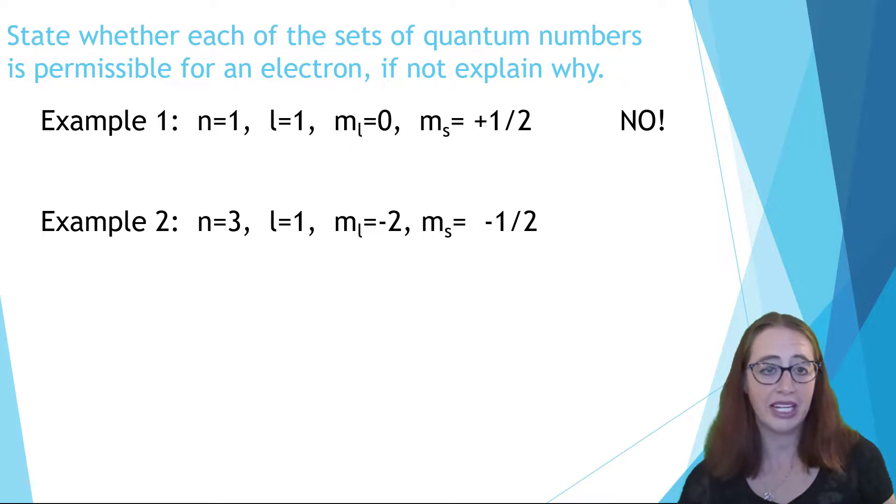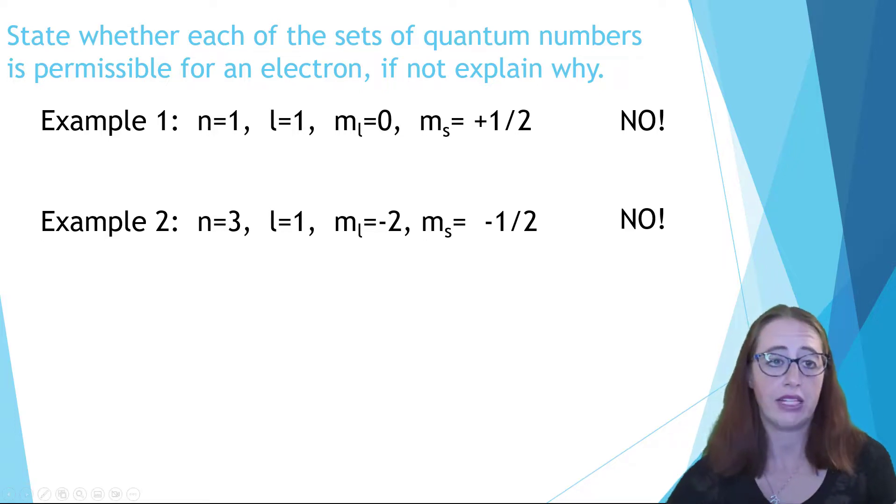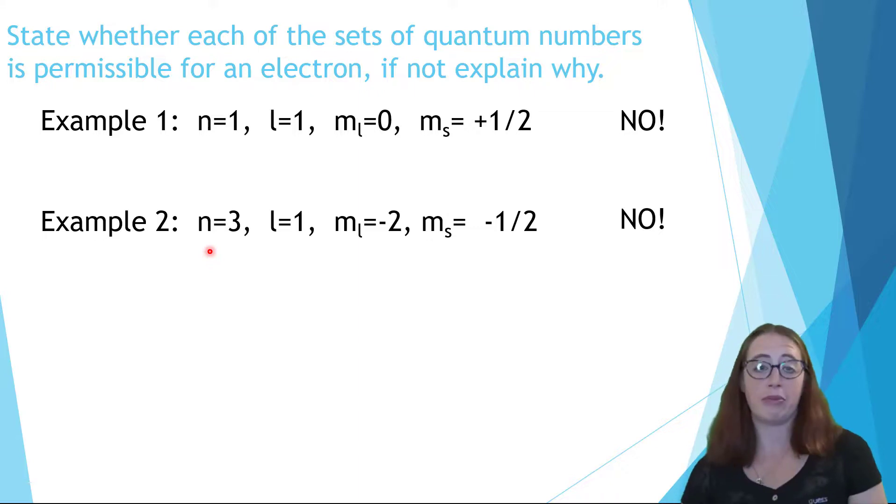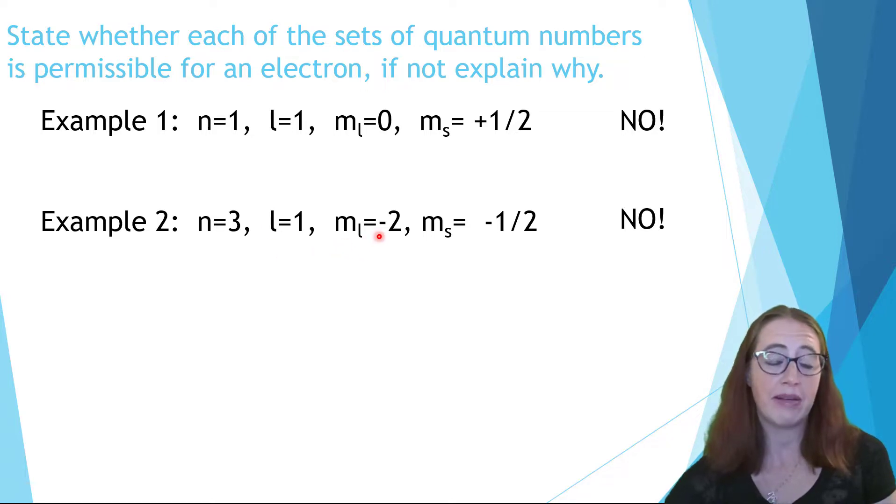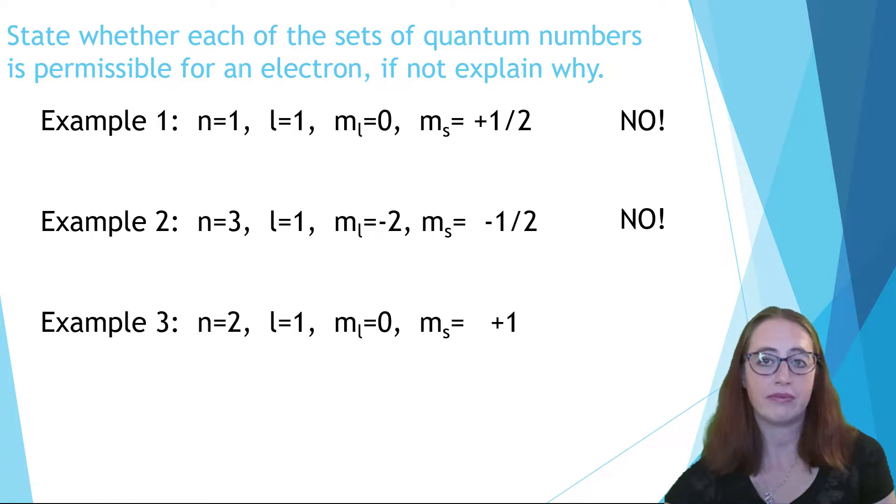Now look at this one. If you said no, then you are correct. What's wrong with the set? Well, if n is equal to three, then l is allowed to equal one. That's true. So the first part is okay. The problem becomes the m sub l equals negative two. While it's true that in the n equals three level, you could have this if l were to equal two, then m sub l would be allowed to equal negative two. But this l value is what sets m sub l. So since l is equal to one, m sub l can only be negative one, zero, and one.